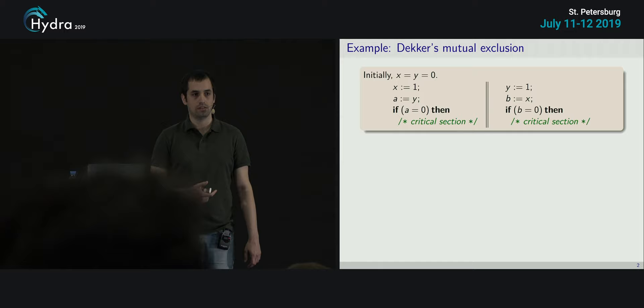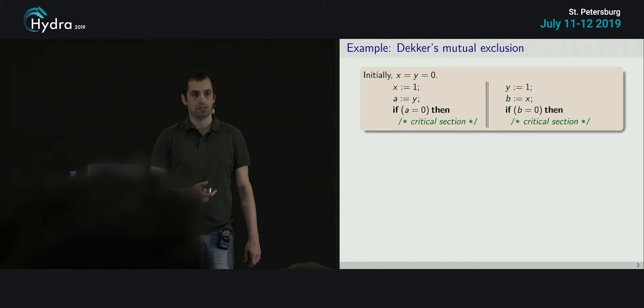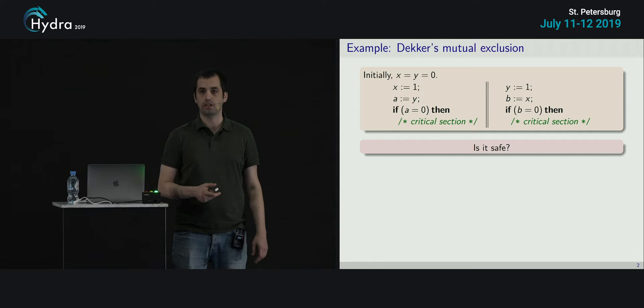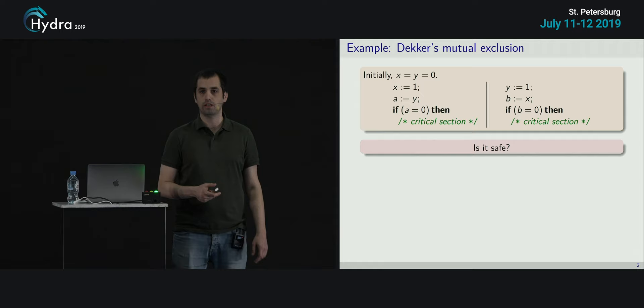Let's start from the basics. If you've ever seen a talk about weak memory concurrency, you saw this example. This is the idea behind Decker's algorithm. We have two threads running in parallel. The first thread is setting a global variable X to one and then reading Y. If it reads zero, it goes to the critical section. The other thread in parallel sets Y to one, reads X to B, and if it reads zero, goes to the critical section. The usual question: can it happen that both threads are simultaneously in the critical section?